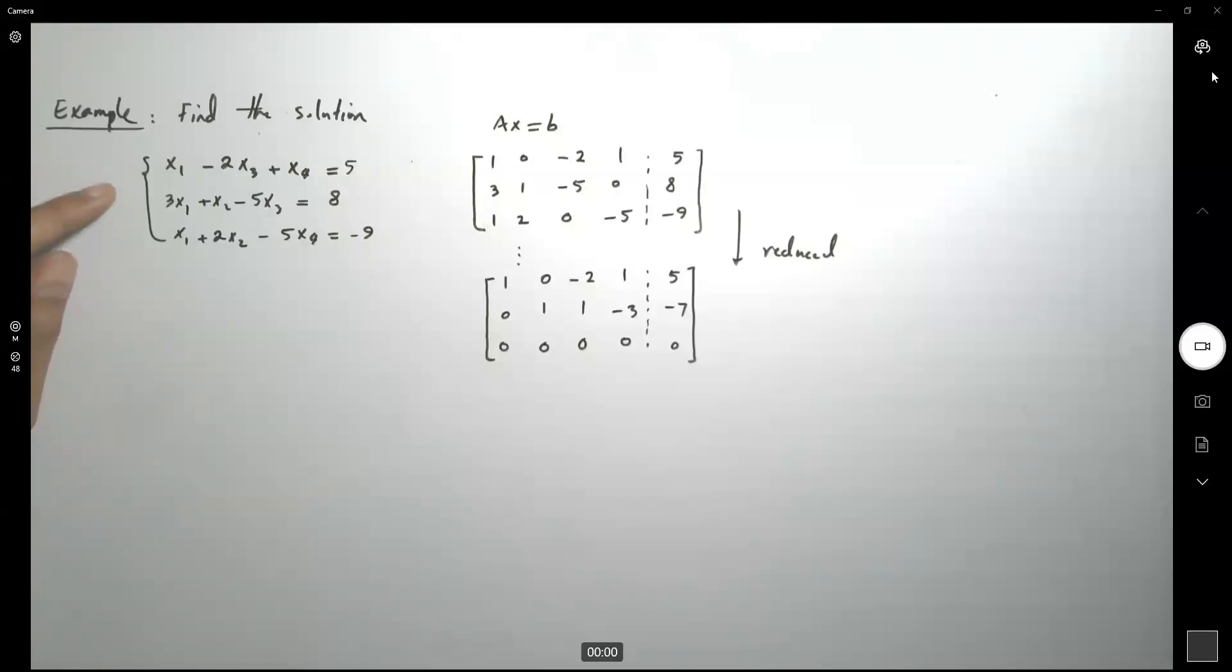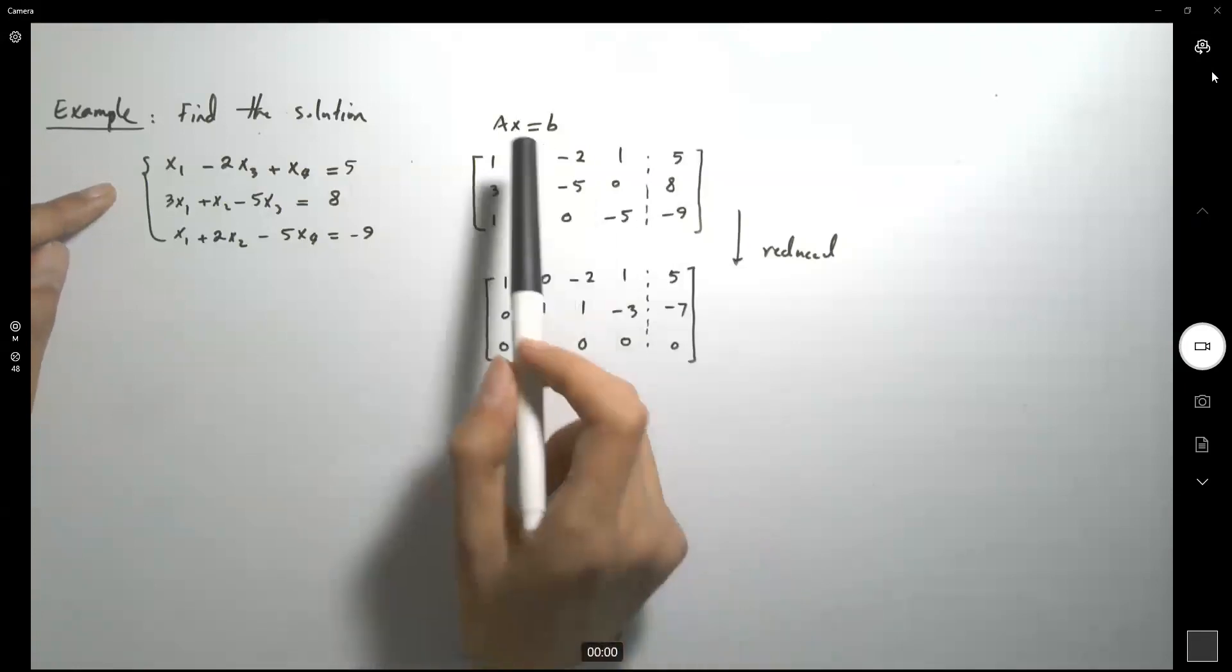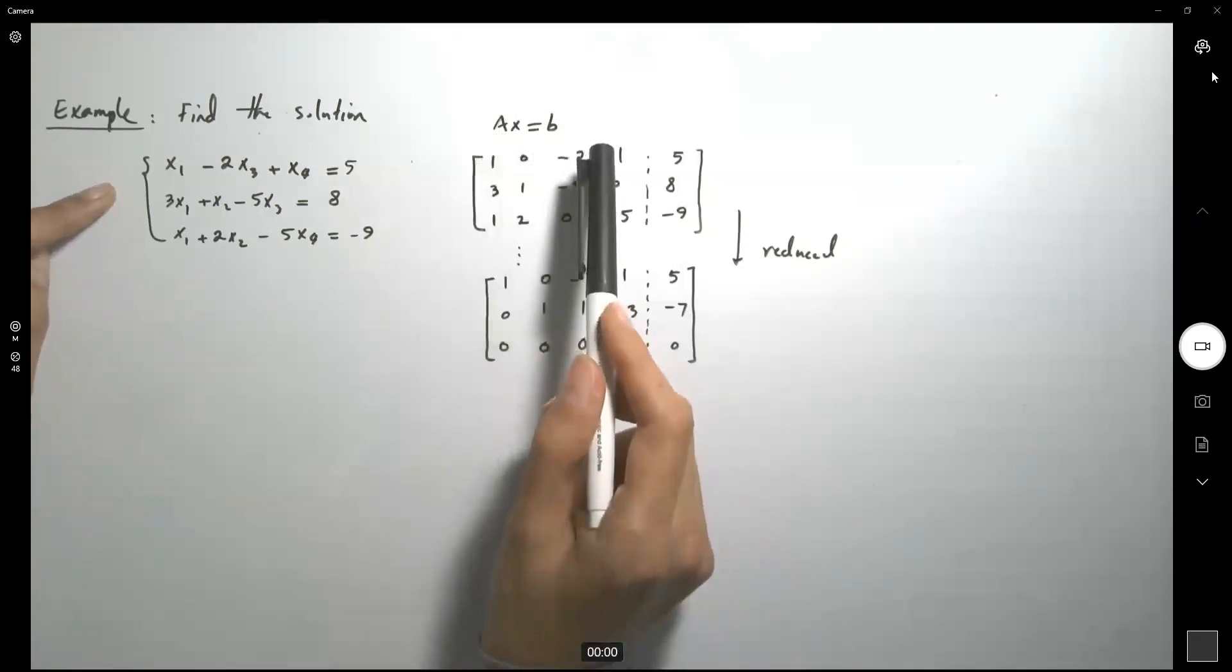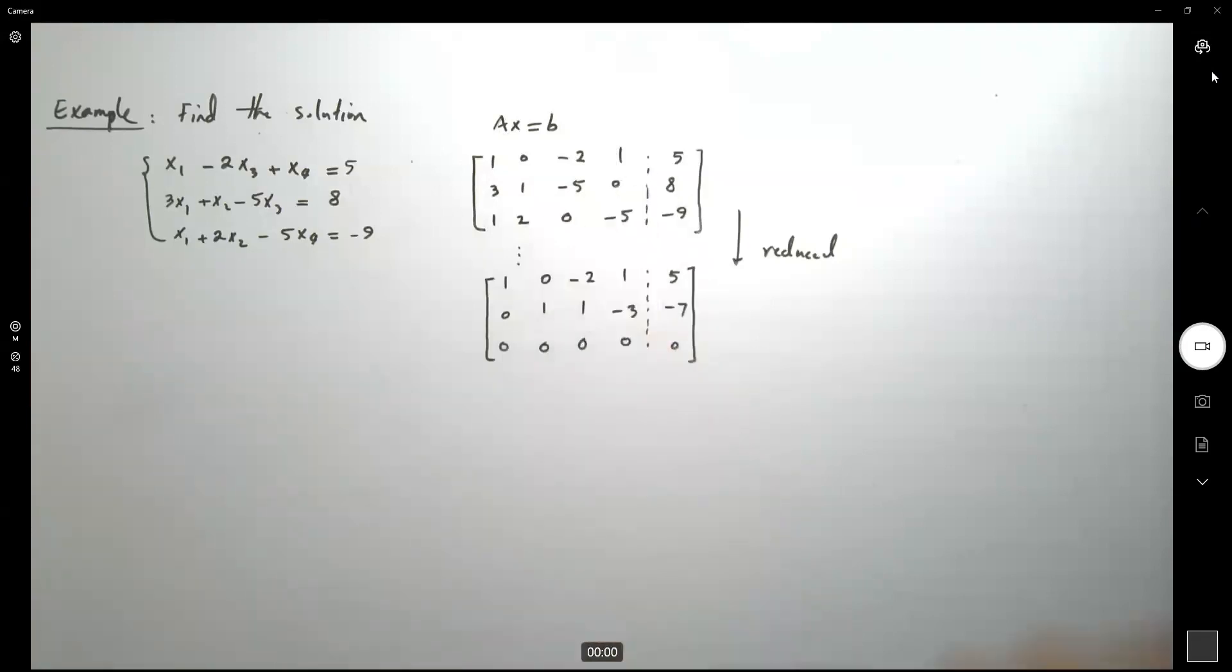Suppose I ask you to find a solution of the following system. As you remember, you form Ax equals b, and then you have the augmented matrix.